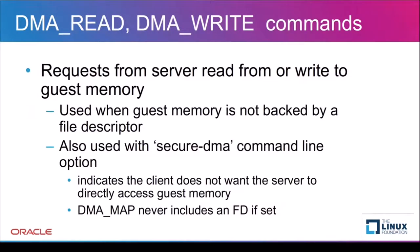DMA memory may be accessed by the server by sending user DMA read and write commands over the socket. The actual direct memory access of client memory from the server is possible if the client provides file descriptors that the server can mmap. The mmap privileges cannot be revoked by the client, so file descriptors should only be exposed in environments where the client trusts the server not to corrupt the guest memory. If the server is not trusted, the secure DMA option can be used and file descriptors will not be exposed to the server.